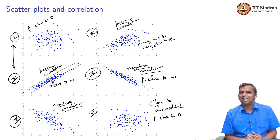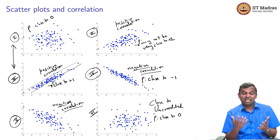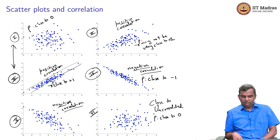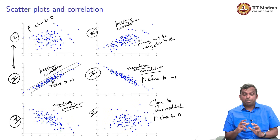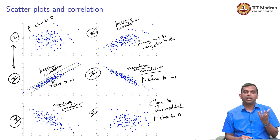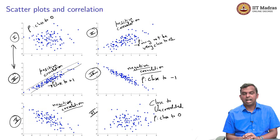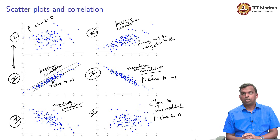I picked nice scatter plots here; actual scatter plots you see may not look like this. Later on, we will see some scatter plots from the IPL and see if we can conclude something interesting. That is all I wanted to say about covariance and correlation. This lecture focused on the relationship between two random variables and coming up with one number to capture a trend: if one random variable is above its average, is the other one also above its average or vice versa? Covariance and correlation are very useful measures for that purpose.